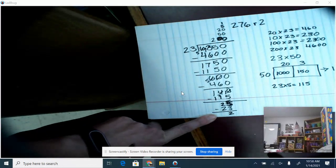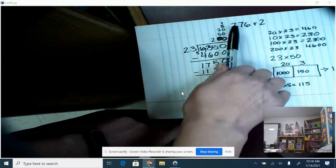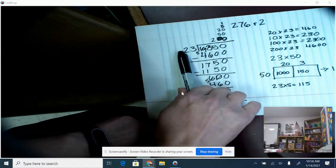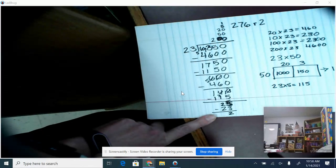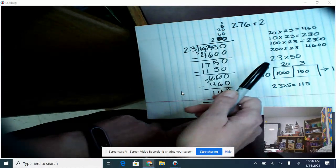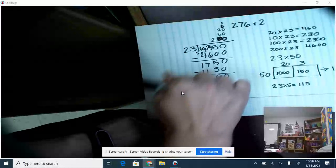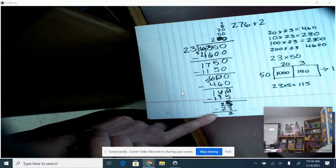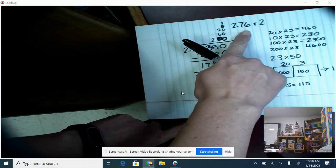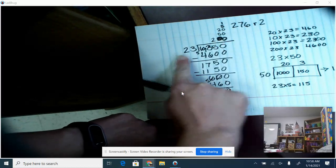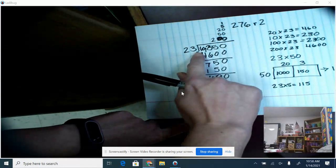So to check to make sure that I'm correct, I would multiply 276 times 23 and then add the 2. So before you submit your answer, I want you to also check by multiplying to see if we did it correct. And so once you do 276 times 23 and then add the 2 to it, you should get 6,000.